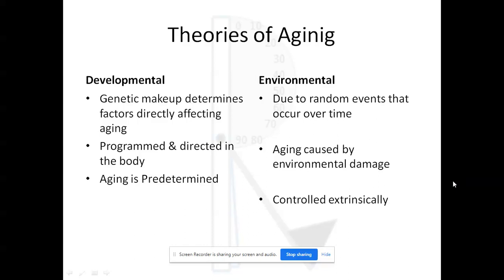Coming to theories of aging: based on genetic theory, classification is divided into two types — developmental (genetic) and environmental (non-genetic). In the developmental category, genetic makeup directly determines factors affecting aging. How strong a person's DNA is will determine how long they can live. Based on DNA alone, we can approximately determine a person's lifespan, meaning genetic makeup determines factors directly affecting aging.